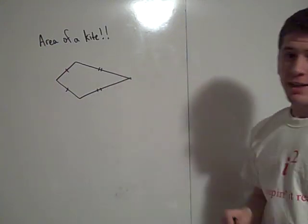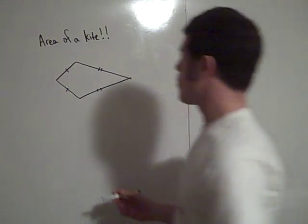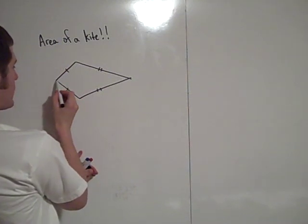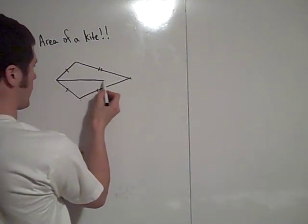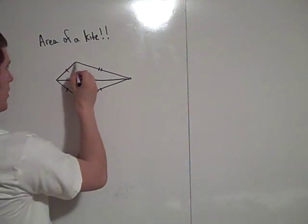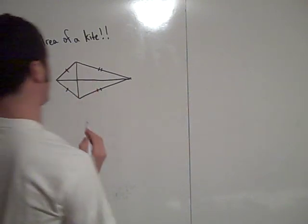You can find the area of a kite lots of ways. One thing you should recognize is that a kite has two diagonals. Let that be diagonal one, and this would be diagonal two.